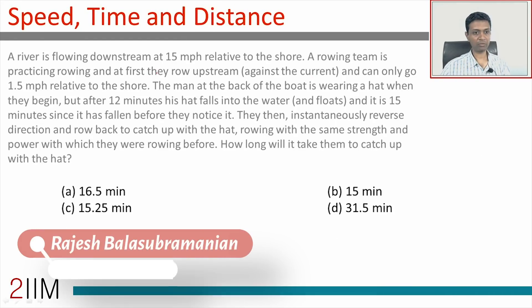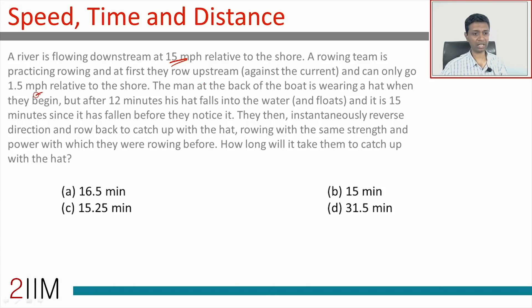It's an interesting question. A river is flowing downstream at 15 miles per hour relative to the shore. A rowing team is practicing rowing, and at first they row upstream and can go only 1.5 miles per hour relative to the shore.